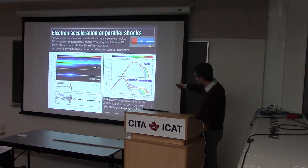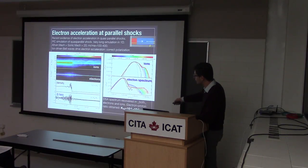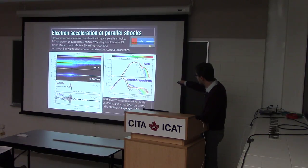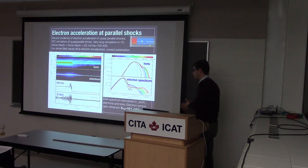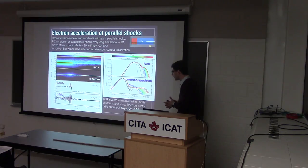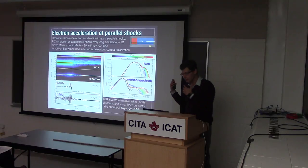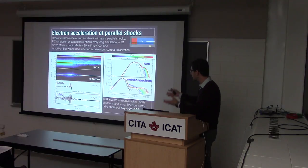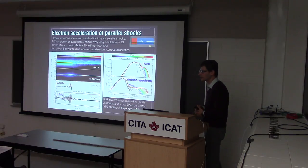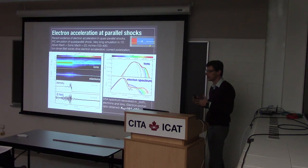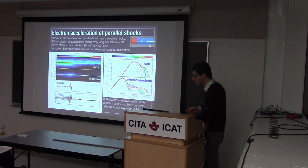Electrons start mirroring away, fly back, and scatter on the turbulence created by the ions. As a result, we can see formation of a power law in both ions and electrons. Both ions and electrons accelerate, and we can measure the relative fraction by dividing one power law by the other. We find this ratio is about 10^{-3} to 10^{-2}: for every proton, we have 10^{-3} accelerated electrons.